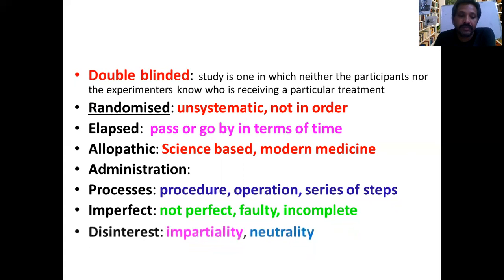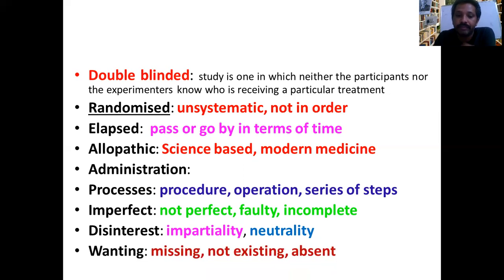Disinterest means impartiality, neutrality, scientific disinterest. Wanting, something missing, not existing, or absent. That's what is wanting. These are the words which are very important to understand today's article. So I guess you all understand each and every word meaning as well as the pronunciation. Now we will move to the next section is loudspeaker. Under the loudspeaker, we will read the article.